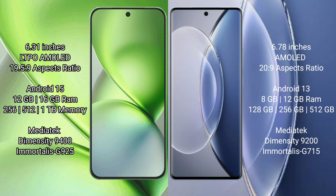Vivo X200 Pro Mini comes with 12GB and 16GB RAM, and 256GB, 512GB, and 1TB internal storage, powered by the MediaTek Dimensity 9400 processor. Vivo X90 comes with 8GB and 12GB RAM, and 128GB, 256GB, and 512GB internal storage, powered by the MediaTek Dimensity 9200 processor.